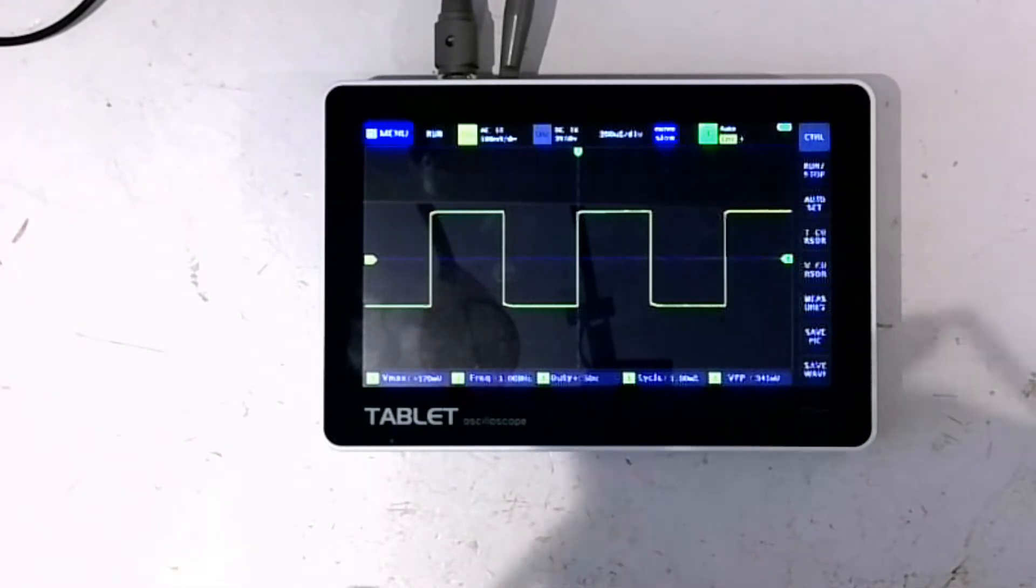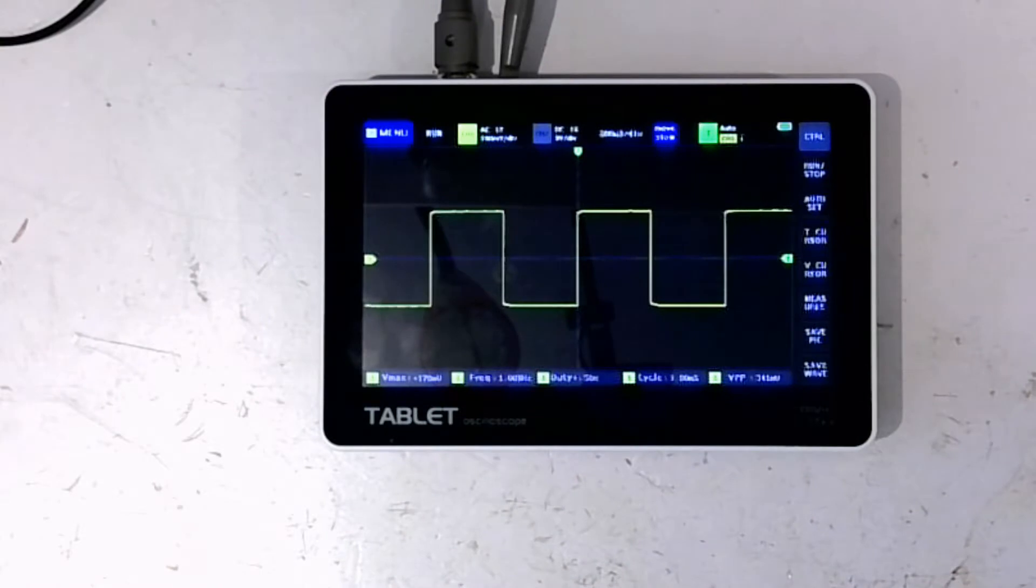I've got a Keysight oscilloscope which is my main scope and it's got about 350 megahertz bandwidth. It's in fact higher than that but it's what I use for main captures where I need to have good resolution.